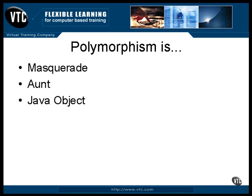When an object in Java is looked at in a different way, it looks like it's a different object and takes on a different face. This is polymorphism. An object can be treated as if it were an object of any of its superclasses, or an object of any interface that it implements, or any of its superclasses implement.